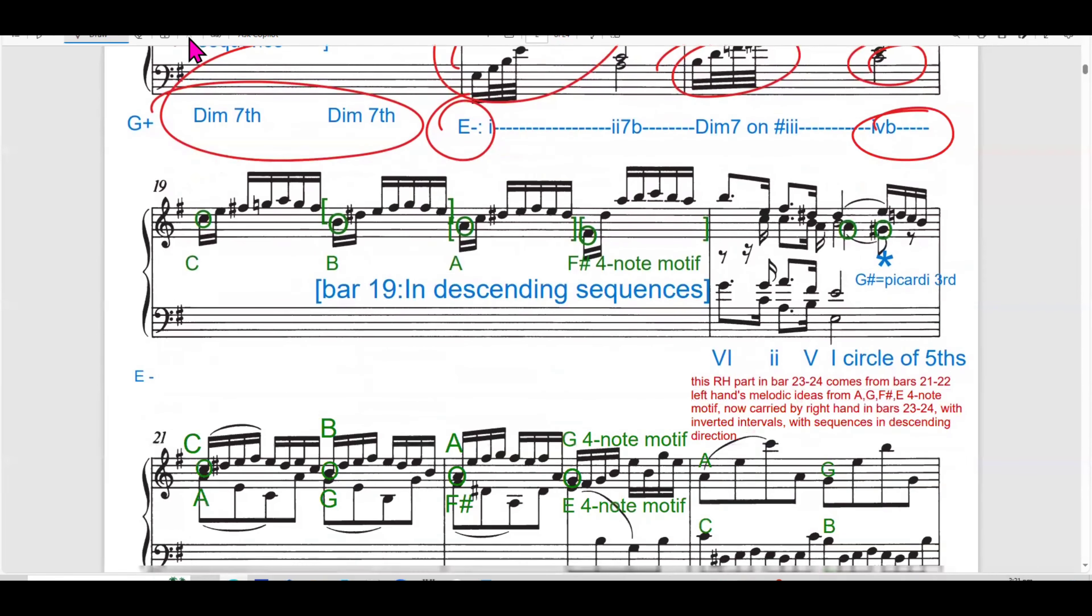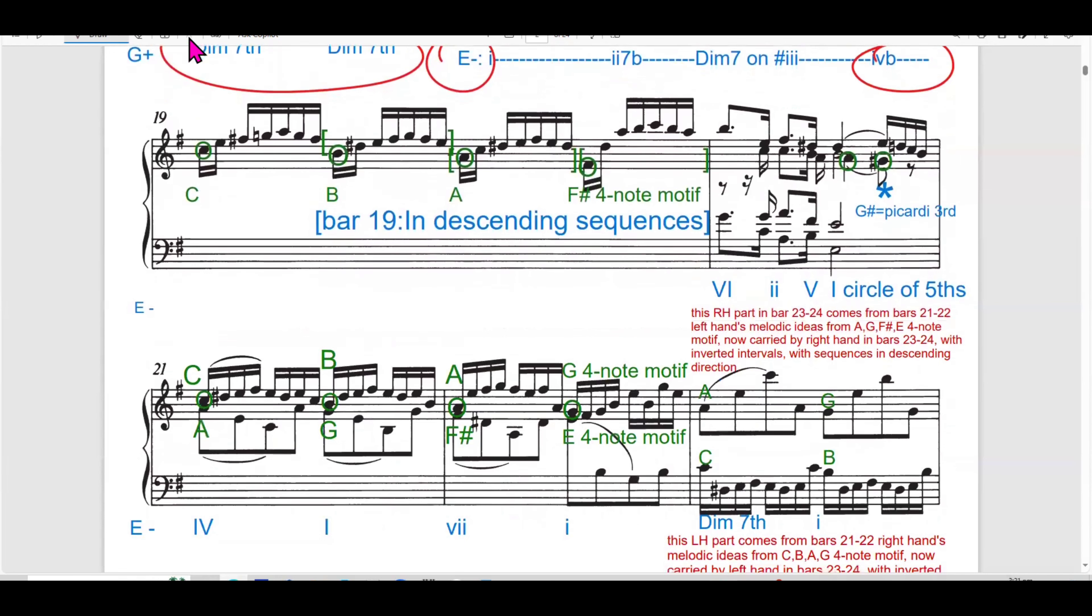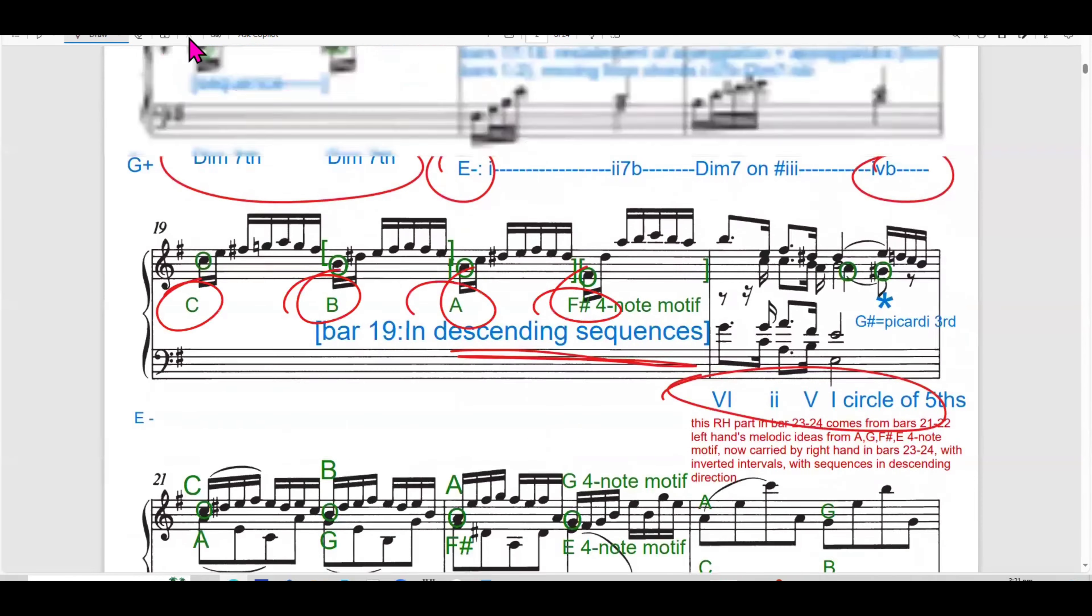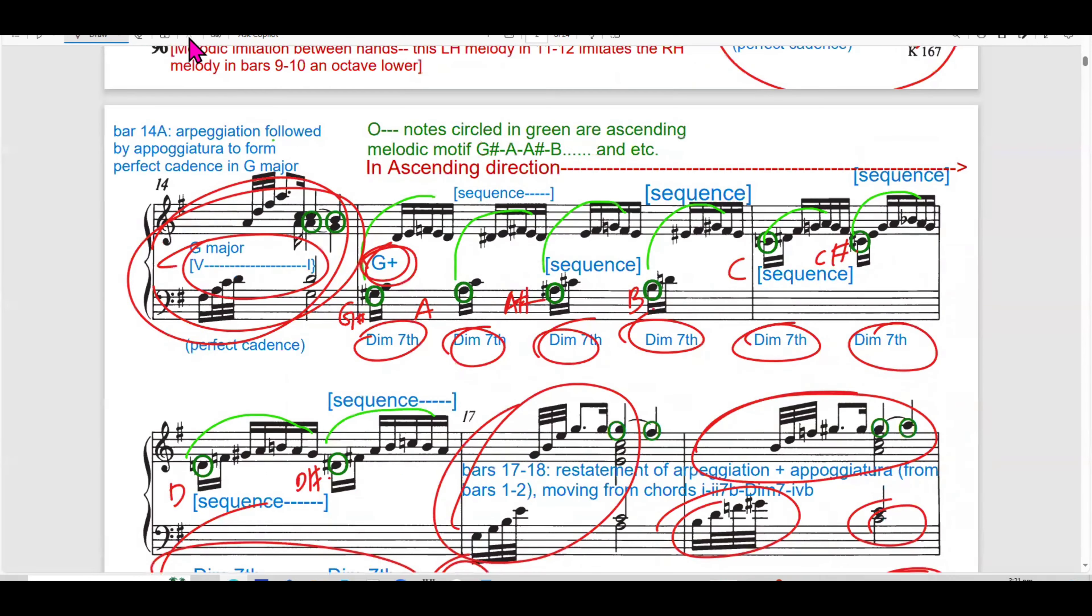The thematic restatement in right hand in bar 17 is accompanied by more active left hand movement, adding texture and depth. This return to the tonic provides a moment of familiarity and stability while subtly evolving the harmonic structure through the addition of 2, 7, B and diminished 7 chords. In bar 18, it continues the harmonic progression moving from 4B in E minor, further elaborating the tension built in the previous bar.